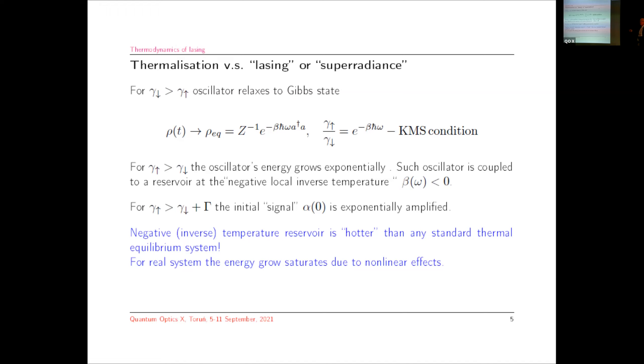Simple properties of this equation: when damping is higher than pumping, this oscillator relaxes to the Gibbs state at the inverse temperature beta. There is a relation which can be called a form of KMS condition which relates the ratio of pumping and damping rates to the inverse temperature. If pumping is stronger than damping, then the oscillator energy grows exponentially. Such oscillator can be treated as coupled to the reservoir at local negative inverse temperature.